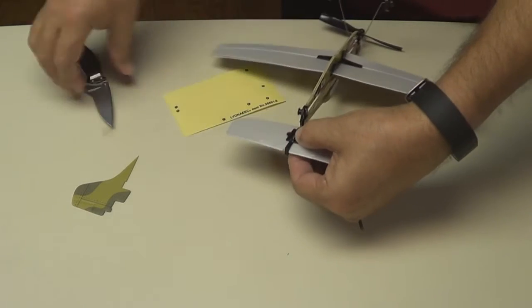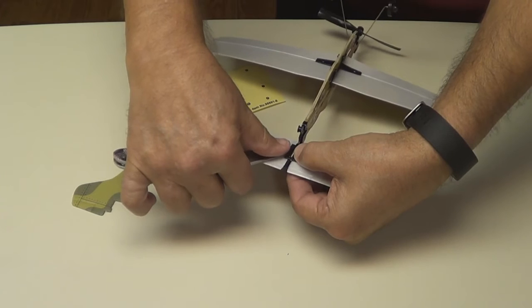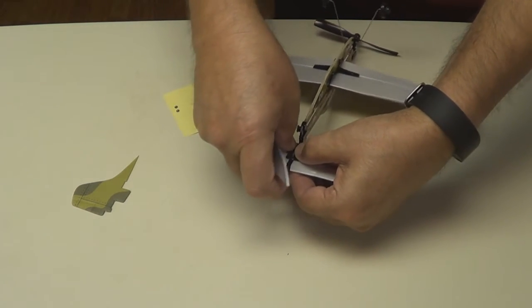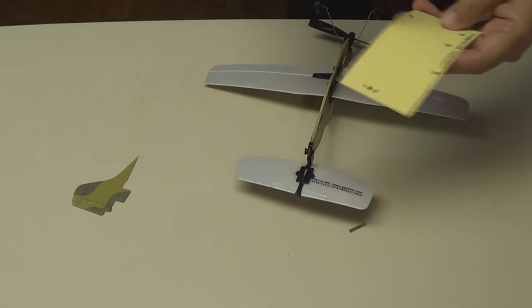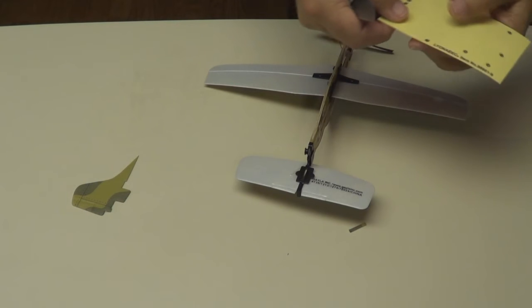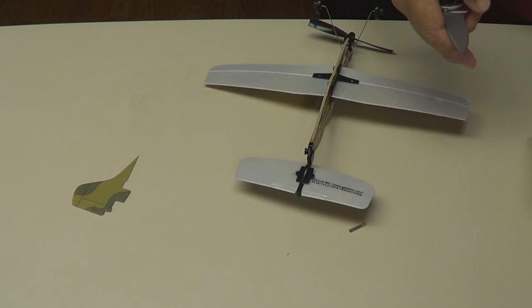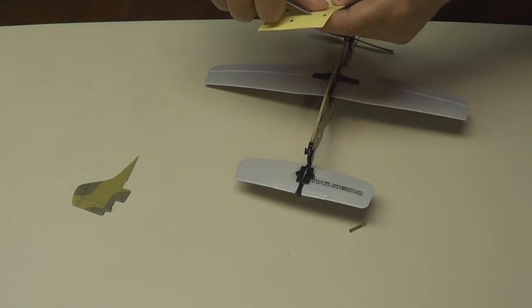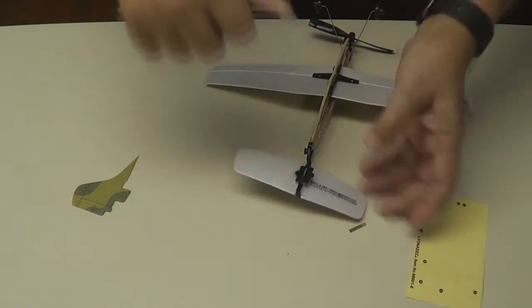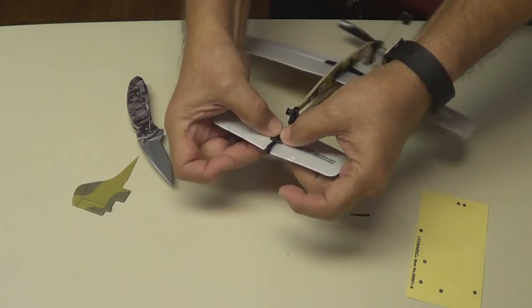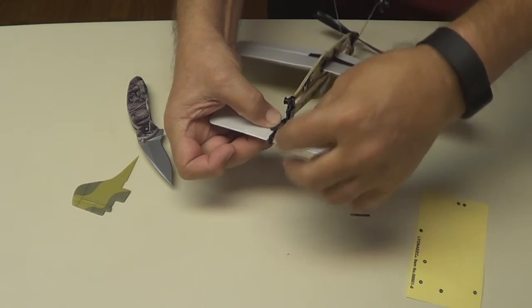Right there. Hold it on. Now we tape it down to that support right there. Just like that. Stick it down good. Let's do the other side. There we go. Tape it down right there. Make sure both sides are stuck down good so it don't fall off when you fly.